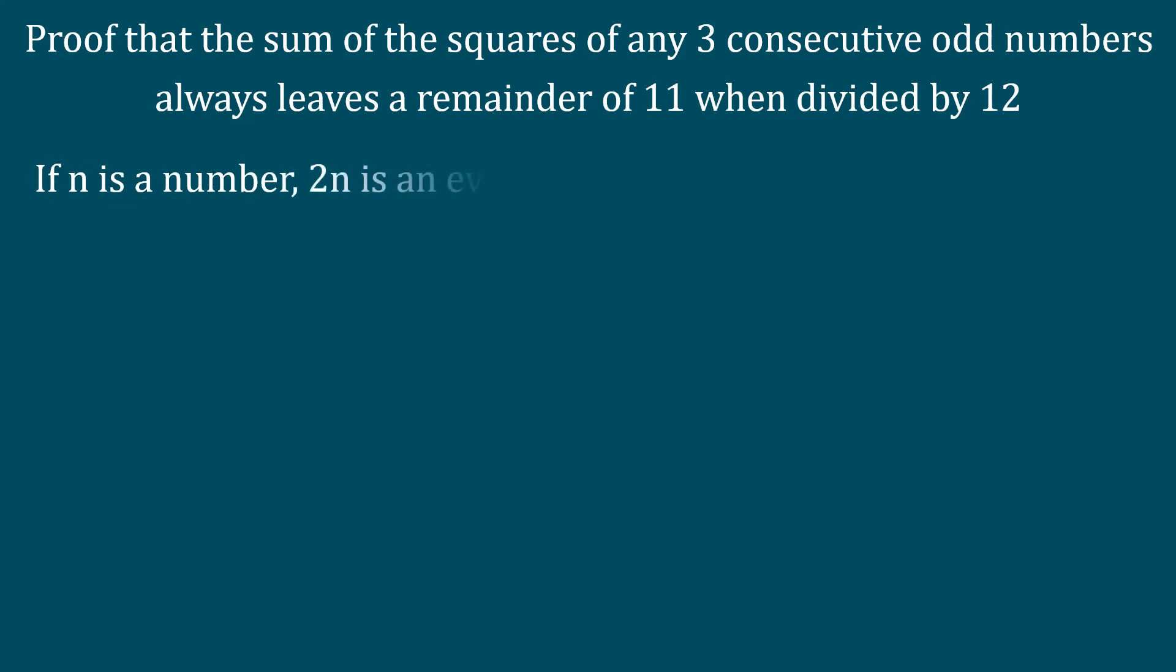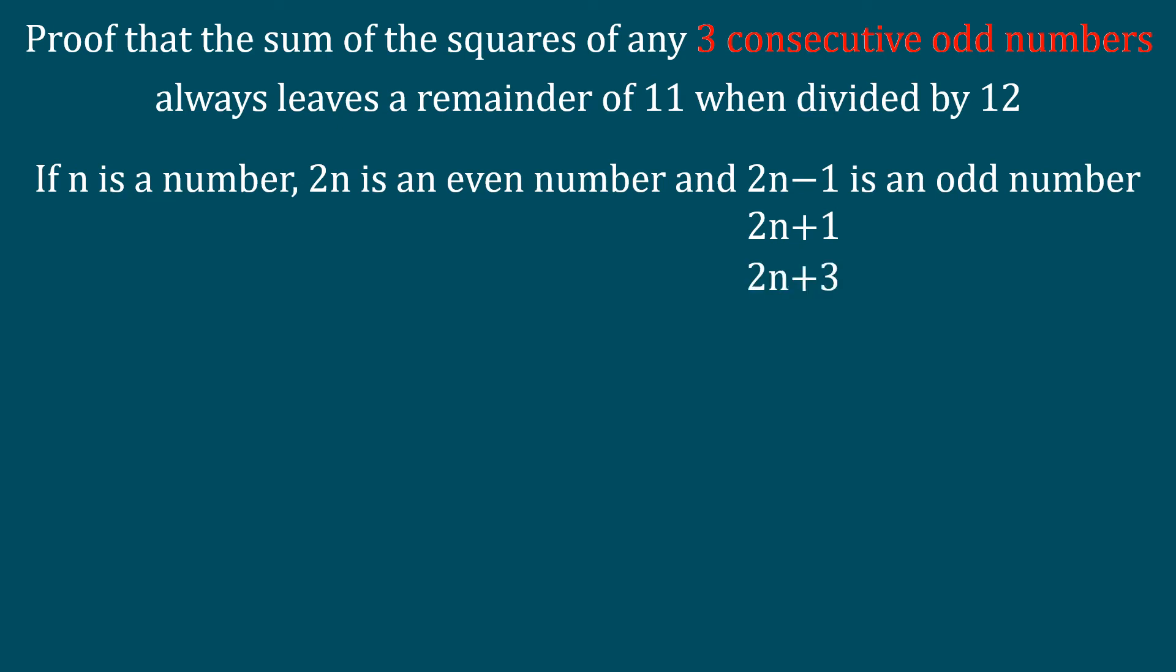If n is a number, 2n is an even number, so 2n-1 is an odd number. 2n+1 and 2n+3 are the next consecutive odd numbers.